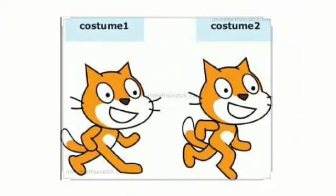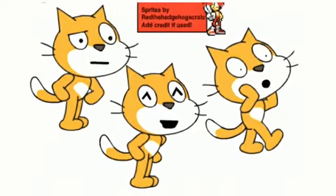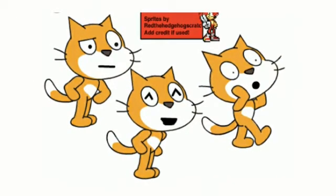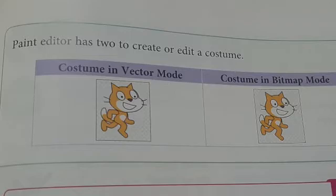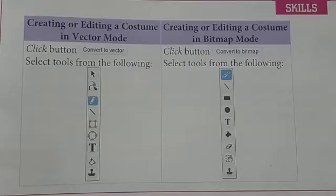We can also draw costumes for a sprite. Do you know what a costume is? Costumes are different looks, appearances, or poses of the sprite, and we can create or edit them using two modes of the paint editor in Scratch: one is costume in vector mode, and one is costume in bitmap mode. The tools are also different in each mode, as shown in the picture.